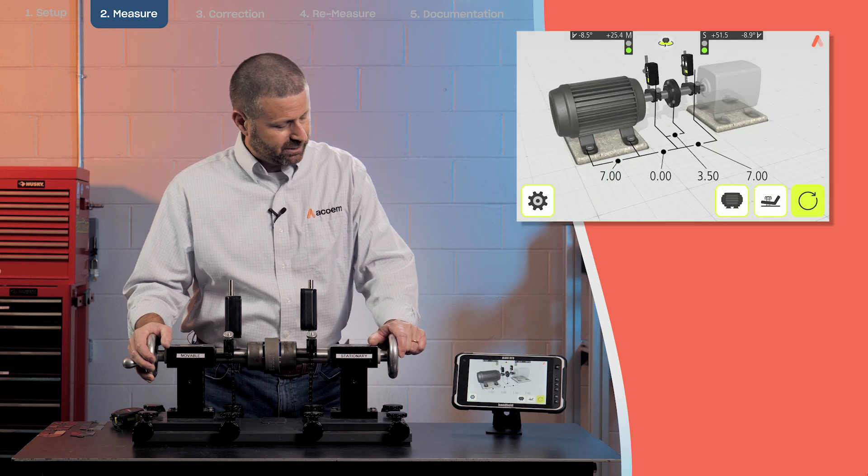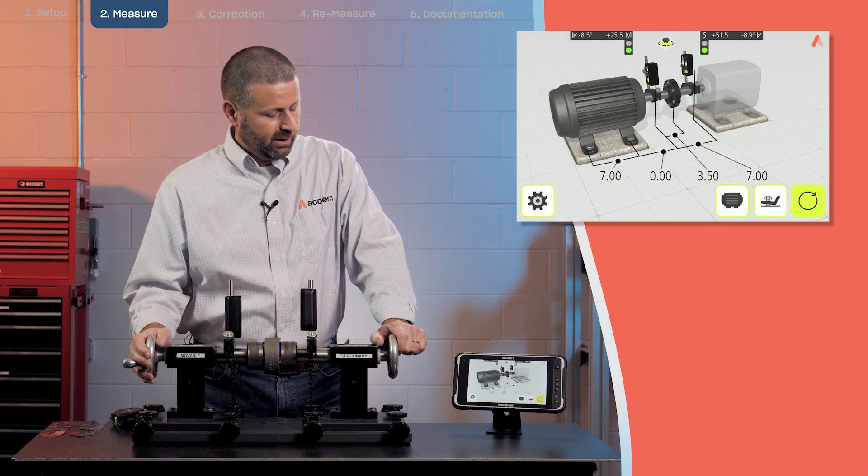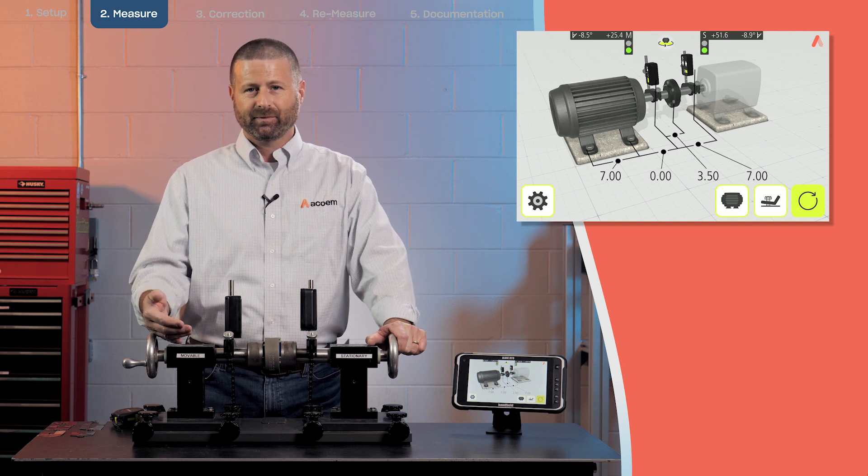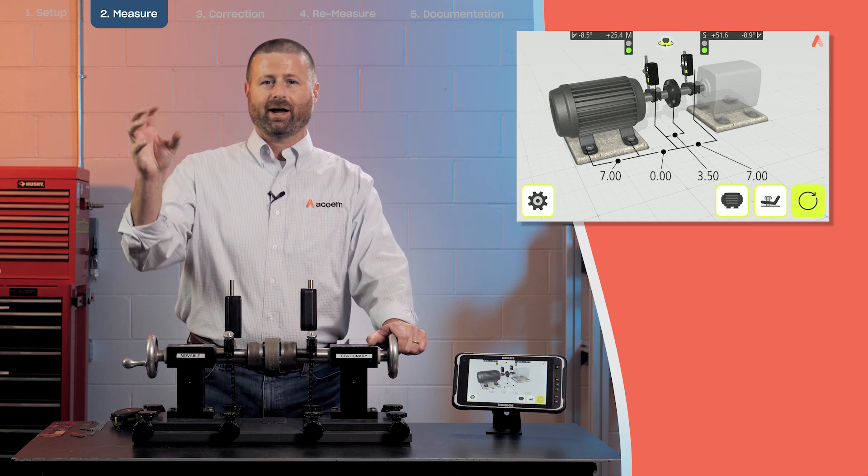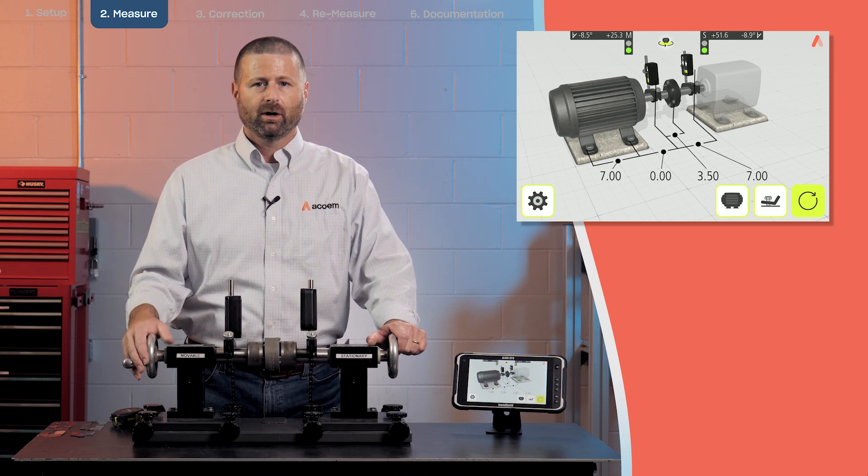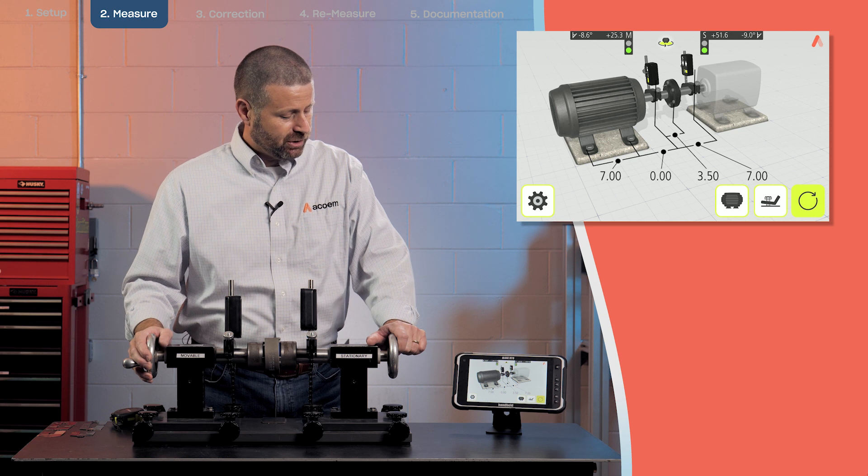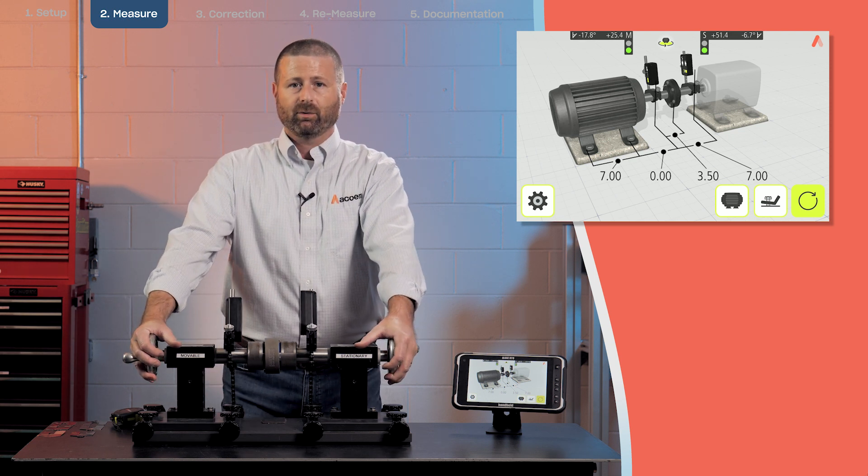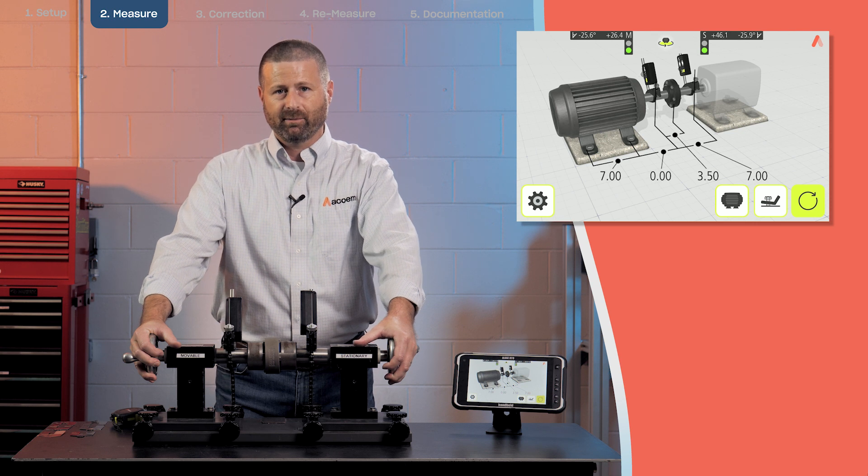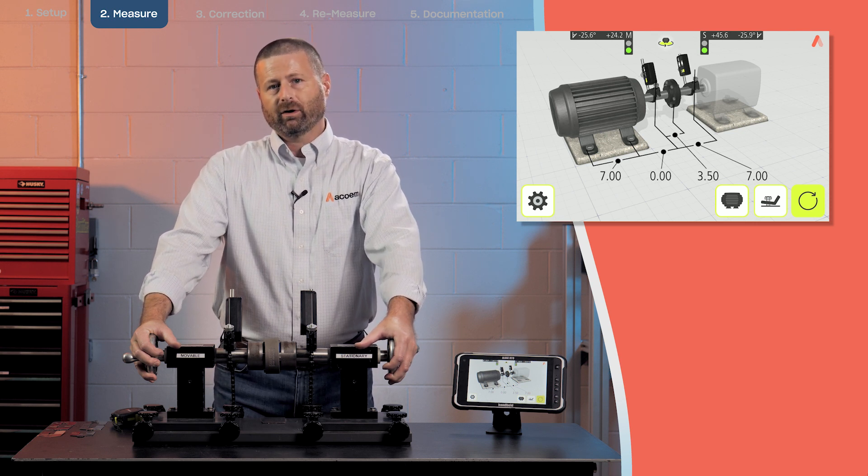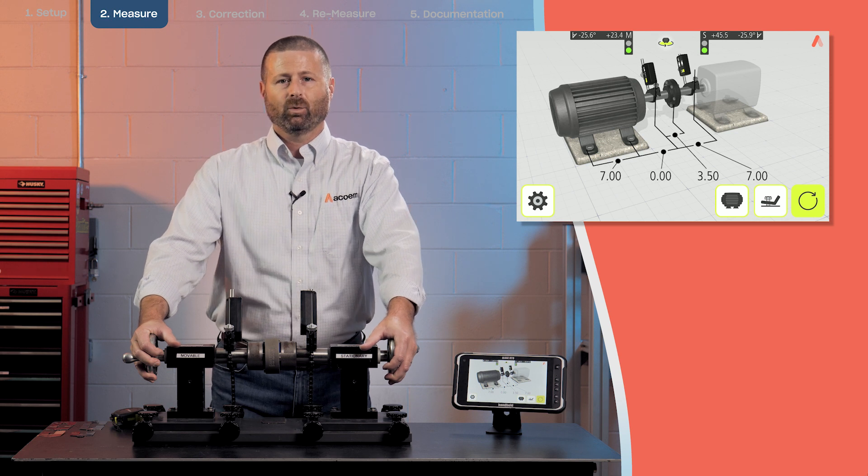So we hit the check box and you'll see each next step of the alignment process is generally highlighted in yellow. That's part of what we call our guide you user interface. So what we're going to do now is something we call a vertizontal alignment. We're going to take one set of shaft alignment measurements and complete both the vertical and the horizontal adjustments in one step.